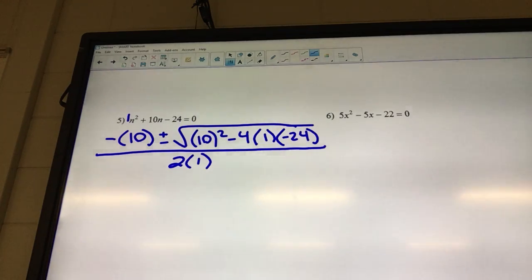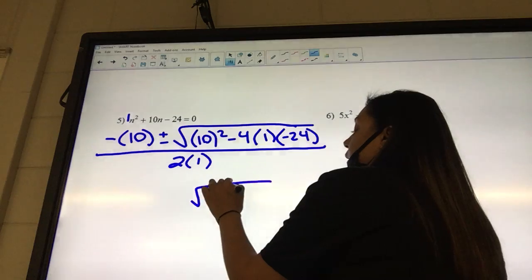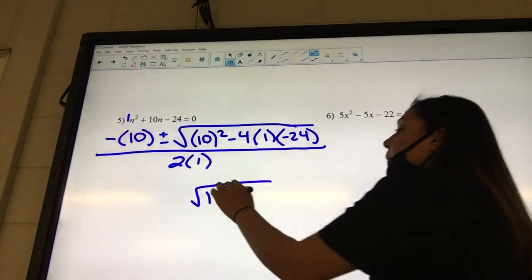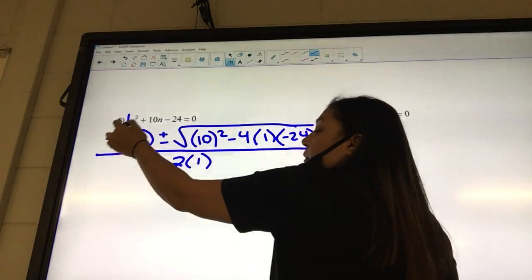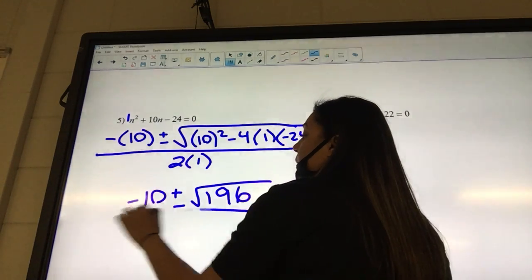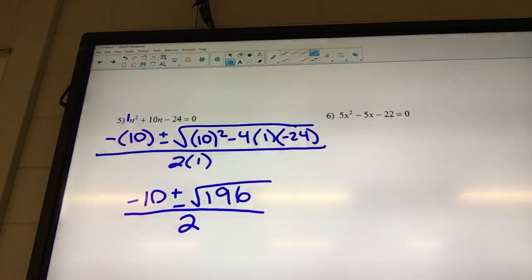Type in underneath the square root, see what you get. 196. Somebody agree? Yes. What are you going to get for the outside? Negative 10. And bottom? 2. Does the square root of 196 simplify or not?